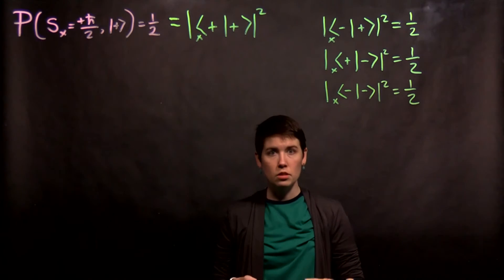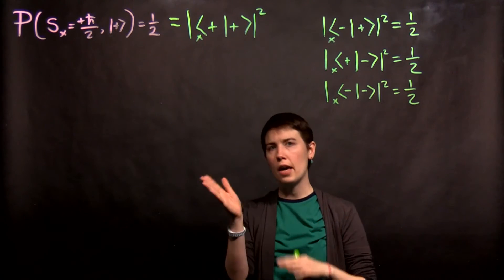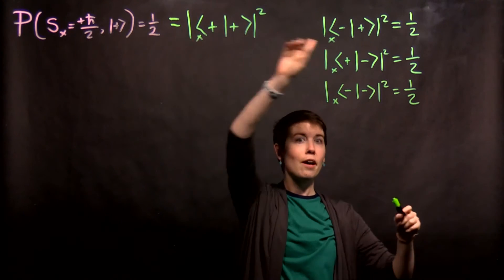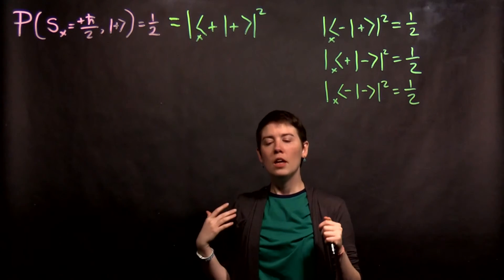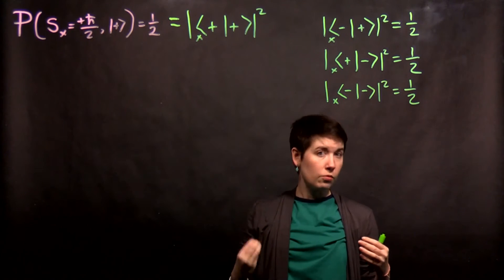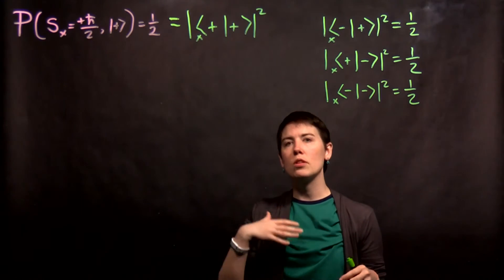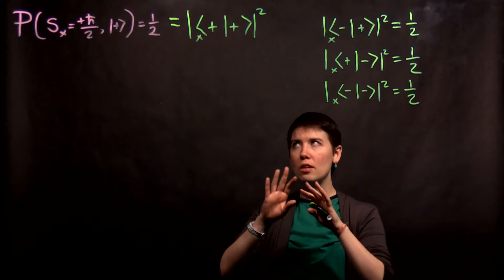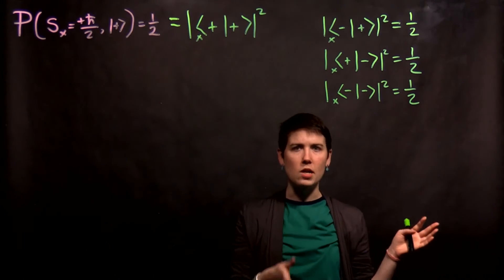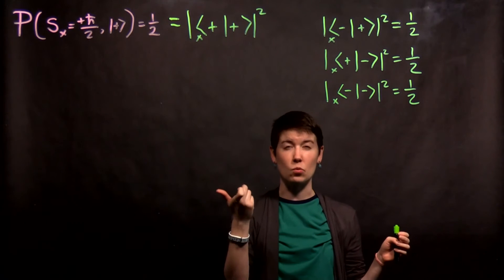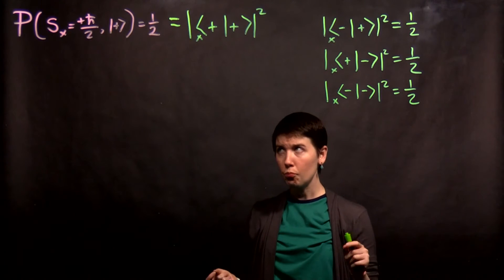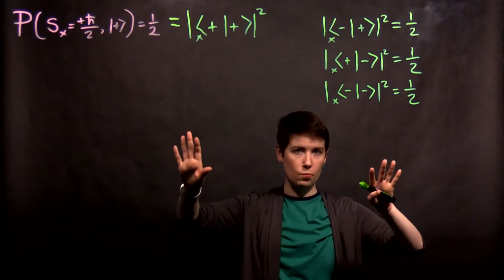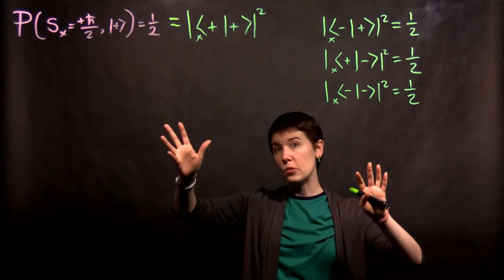This is a pattern we're going to see when comparing x and y, y and z, x and z — it's one half in every case. Now you might just guess what the coefficients are, but we're going to go through this in a very specific way. The reason is that if you take certain shortcuts and then apply it to the y basis as well, it wouldn't work. So we're just using this experimental data as our starting point.